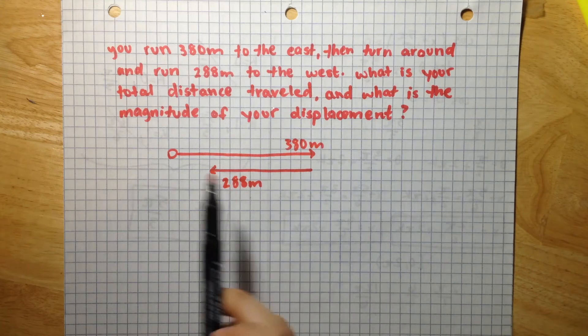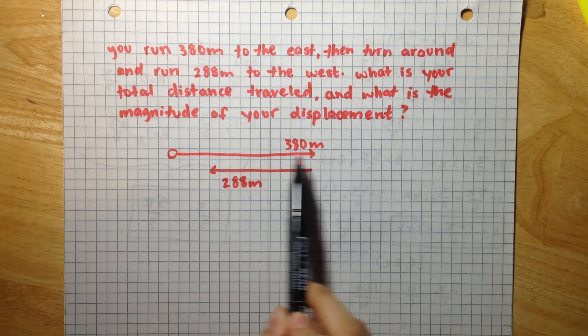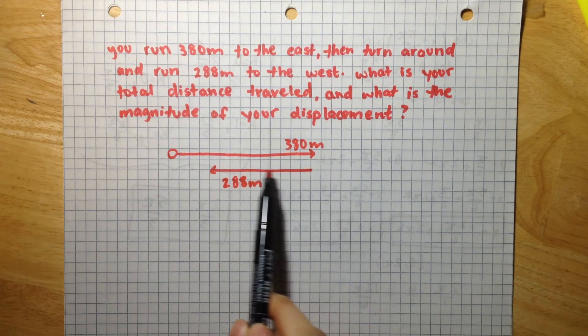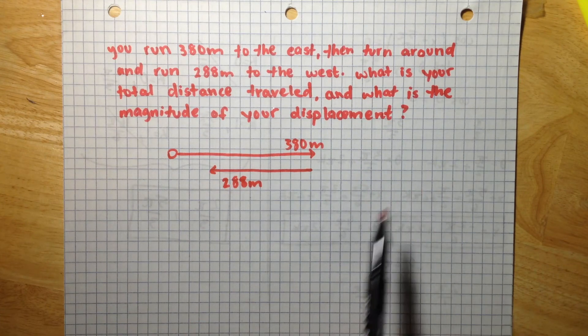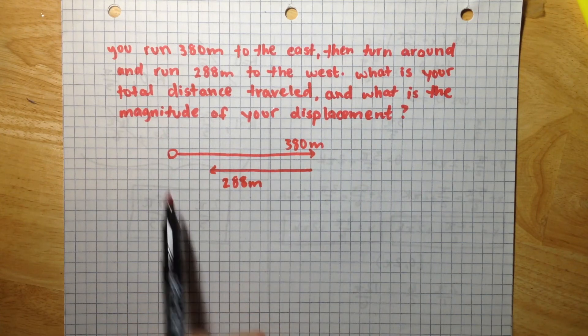So, your total distance traveled is how much you ran to the east, and then how much you turned around and ran to the west. And your total displacement will be how much you moved from your starting point.